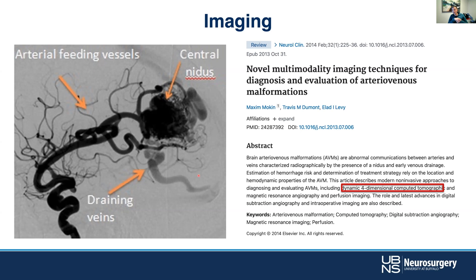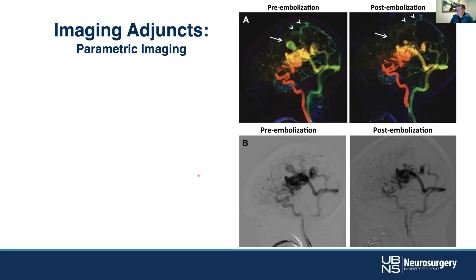One of the advantages of angiography is that you capture time — you have temporal resolution in addition to spatial resolution. So you can follow what normally would be artery, capillary, vein as the dye flows through. You can query when the vein shows up, whether certain torrents are higher flow than others, and really get a sense of the hemodynamics of the lesion.